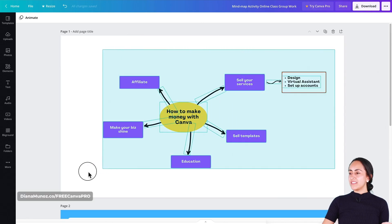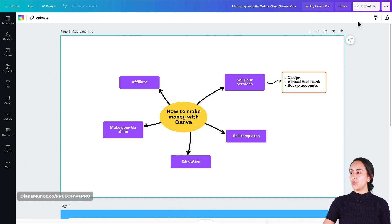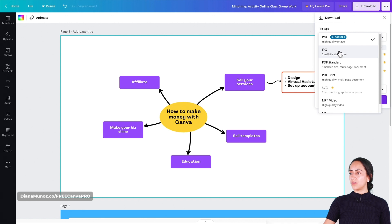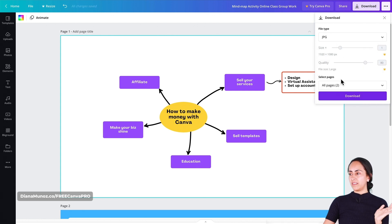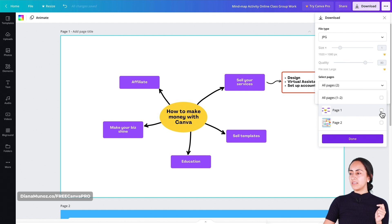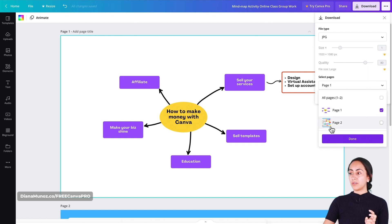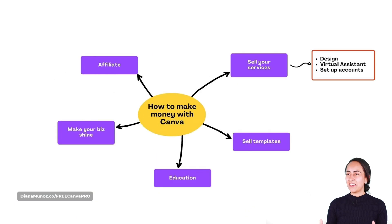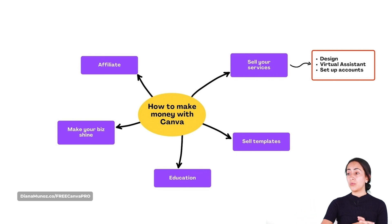Once your design is ready with all your ideas, go to the navigation bar on top and hit Download. Select your file type — I'll choose JPEG. Before downloading, make sure to select the page with your mind map. In this case, the second page is filled with elements you may not need, so select page one, hit Done and Download. This is the final result — the image is on my computer, completely free with no watermark, 100% in Canva.